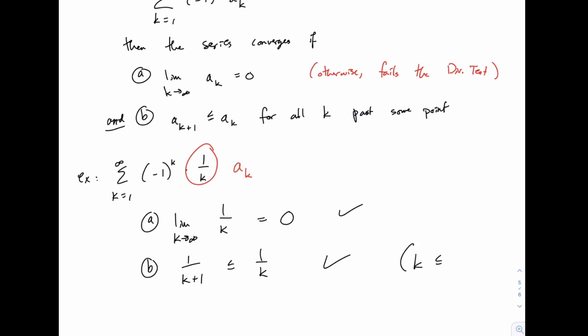Because, of course, k is less than or equal to k+1. And so, since k is smaller, 1/k is larger, because the smaller denominator has a larger result.